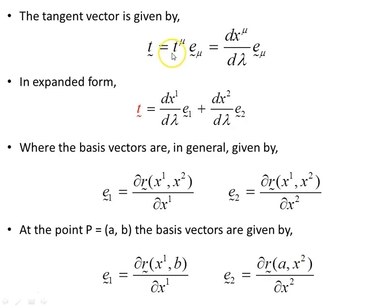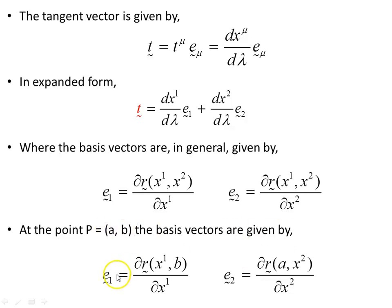The tangent vector is written in components as T superscript mu times the basis e subscript mu, which equals dx mu / d lambda times e mu. The basis vectors in general are given by e1 = partial R / partial x1 and e2 = partial R / partial x2. At the point p = (a, b), e1 is the partial derivative of R with respect to x1 with x2 held at b, and e2 is the partial derivative with respect to x2 with x1 held at a.